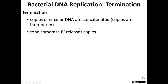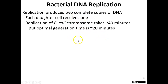The last step is termination. Once we have replicated the entire DNA strand, the copies are released by an enzyme called topoisomerase. Now we have two circular double-stranded DNA molecules. One goes into one daughter cell, and the other goes into the other daughter cell, so each daughter cell receives one complete circular chromosome.